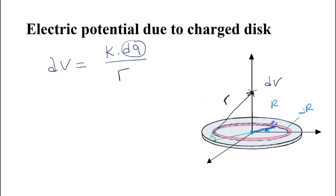Now we need to find this pink area. By definition, the charge dQ will be the surface charge density sigma times the element of area. The element of area where dQ is placed is just the circumference of this pink ring times the thickness of the strip, giving dA = 2πr·dr.